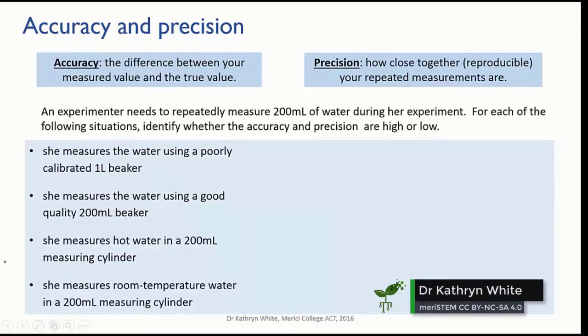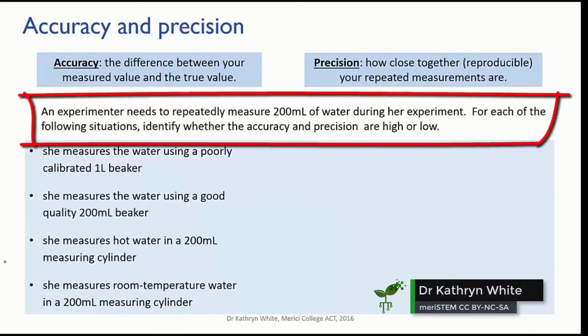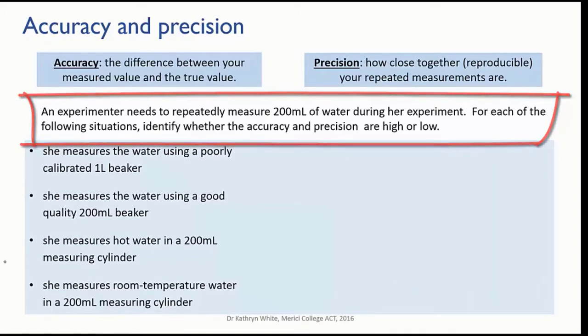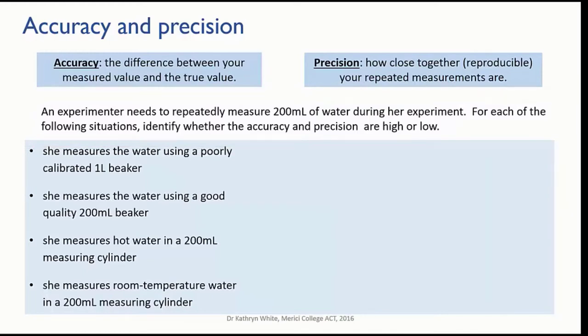Okay, so archery's all very well, but let's think about an actual experimental situation. Imagine an experimenter has to repeatedly measure out 200 mils of water during an experiment, and she needs to make sure that each sample is as close to 200 mils as she can get it.